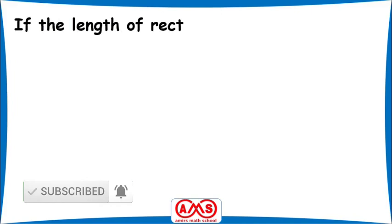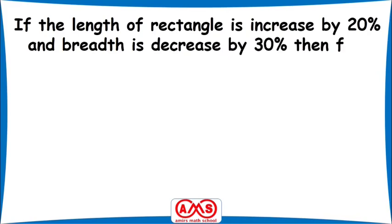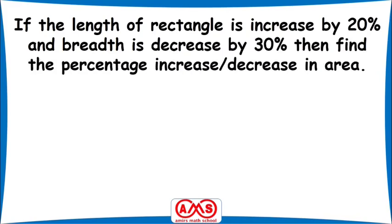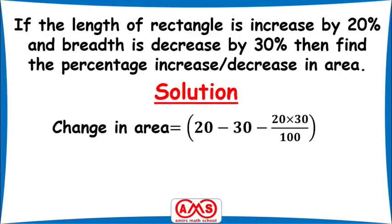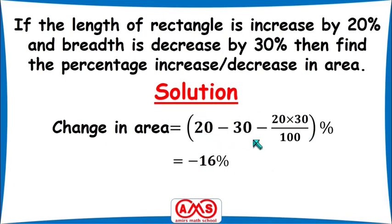Another problem: if the length of a rectangle is increased by 20% and the breadth is decreased by 30%, find the percentage of increase or decrease in area. Change in area equals 20 minus 30 minus (20 times 30) divided by 100 percent. Here 20 is positive (increase) and 30 is negative (decrease). After calculation we get minus 16%, so the area decreases by 16%.